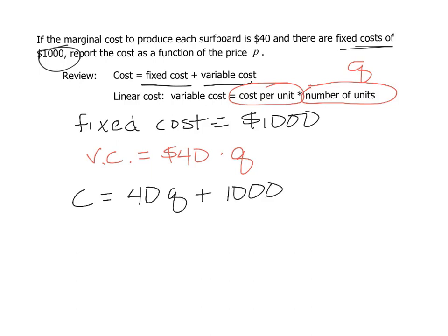The problem with this cost function is they ask us to find the cost as a function of P. We have the cost as a function of Q. But we do have that formula that we built in the earlier parts that told us that Q is negative 2P plus 300.